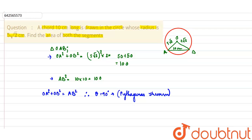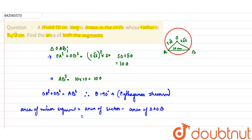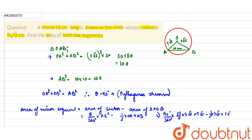Now we need to find the area of the minor segment. Area of minor segment = area of sector − area of triangle AOB = (θ/360°) × πR² − (1/2) × OA × OB. Substituting θ = 90°: (90/360) × (22/7) × (5√2)² − (1/2) × (5√2) × (5√2) = 14.29 cm².